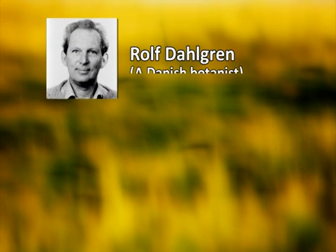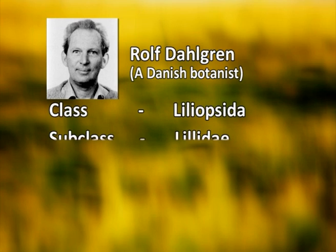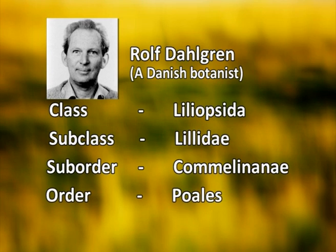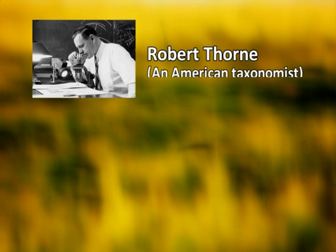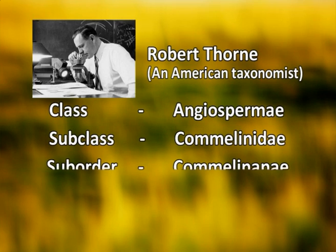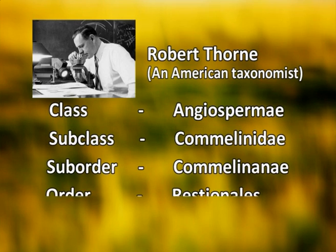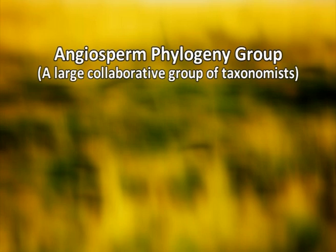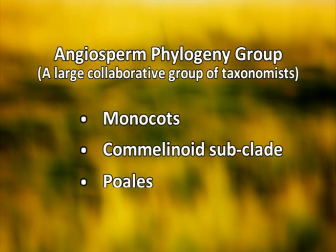The Danish botanist Dahlgren ranked this family at the class Liliopsida, subclass Liliidae, super order Commeliniflorae, and order Poales. Robert Thorne recently ranked it at the class Angiospermae, subclass Commelinidae, super order Commeliniflorae, and order Restionales. Very recently, the Angiosperm Phylogeny Group — a collaborative group of taxonomists proposing a rankless classification — recognizes Poaceae under the monocots, subclade Commelinids, and order Poales.